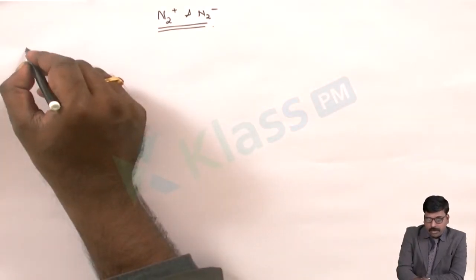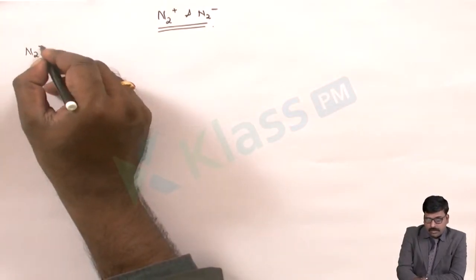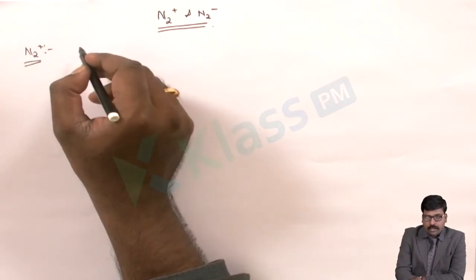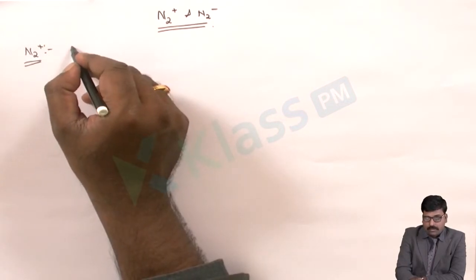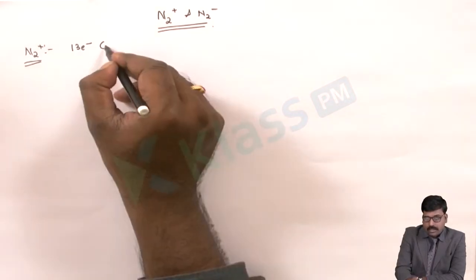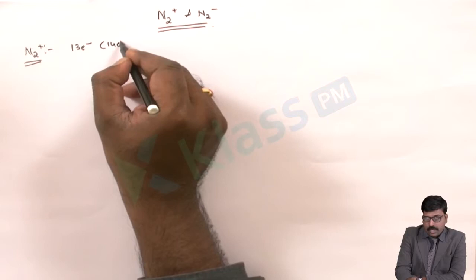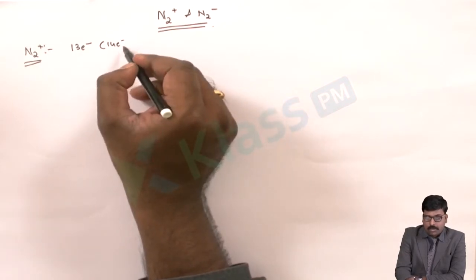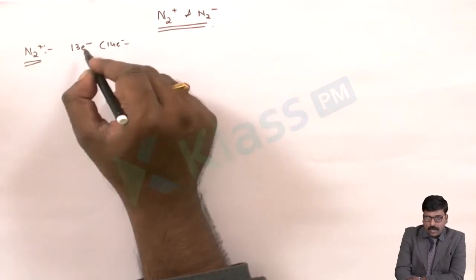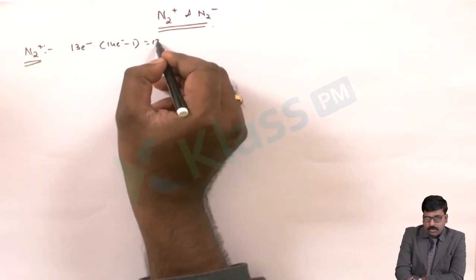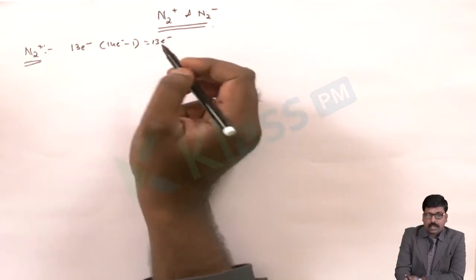For the N2 plus ion: N2 plus consists of 13 electrons, that is 14 electrons like the N2 molecule with one electron removed, giving 13 electrons total.